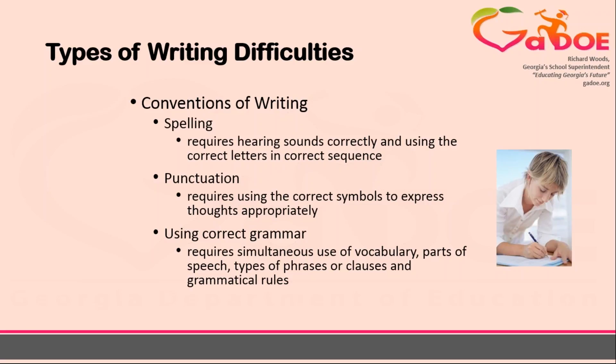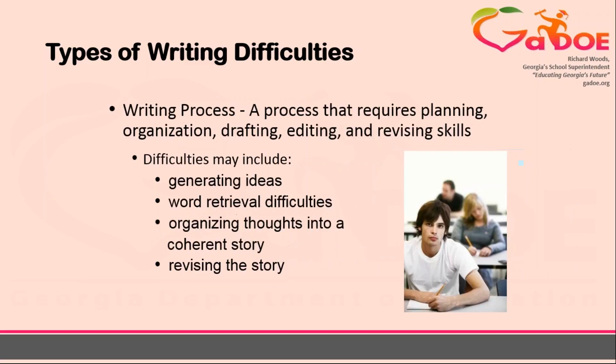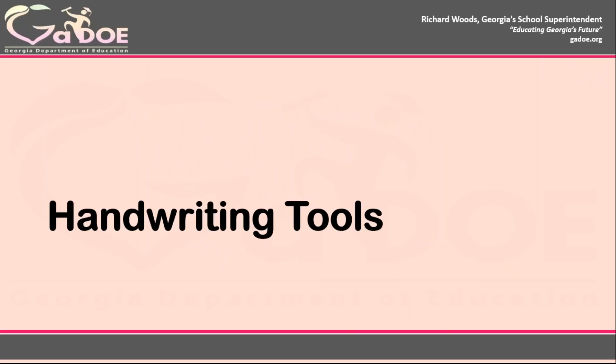Is it in handwriting? The conventions of writing? Or the writing process itself? The point or points where the student is breaking down will determine the type of assistive technology that they need. This video is not intended to provide recommendations on assistive technology to address specific writing difficulties, as this is very individualized to each student. It will provide examples of the types of technology that might be appropriate for each area of writing.